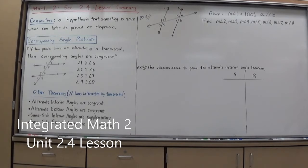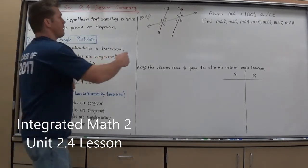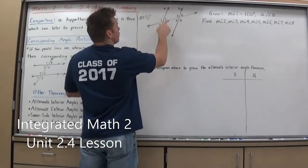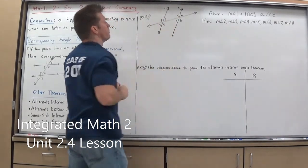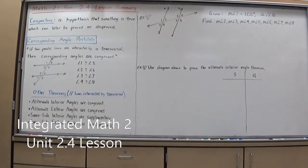The first vocabulary we're going to deal with today is conjecture. Conjecturing is something that you're going to be doing a lot of throughout your mathematics career. A conjecture is a hypothesis that something is true, which can later be proved or disproved. You might have a theory that angle 2 is congruent to angle 7, and you then go through the process of proving it to see if your conjecture is true.